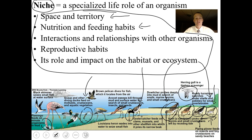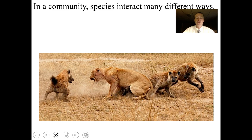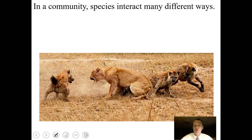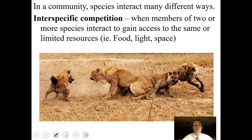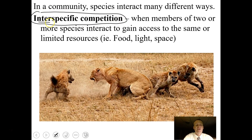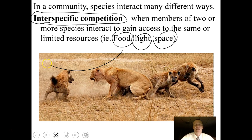When you get competition, things get really interesting. Species in a community interact in many different kinds of ways. One of the interesting ones is interspecific competition — 'inter' means between, so this is competition between species. When members of two or more species interact to gain access to the same limited resources such as food, light, and space, that's interspecific competition. A lion competing with a group of hyenas is an example.